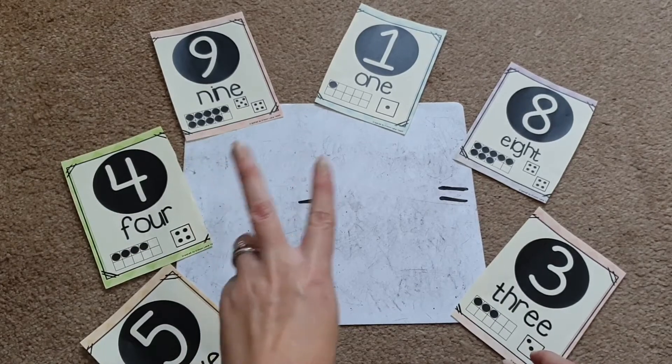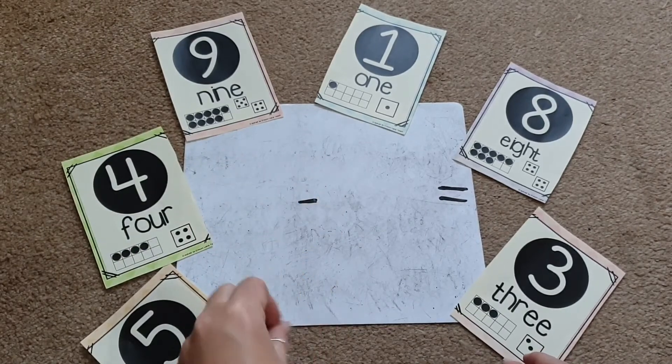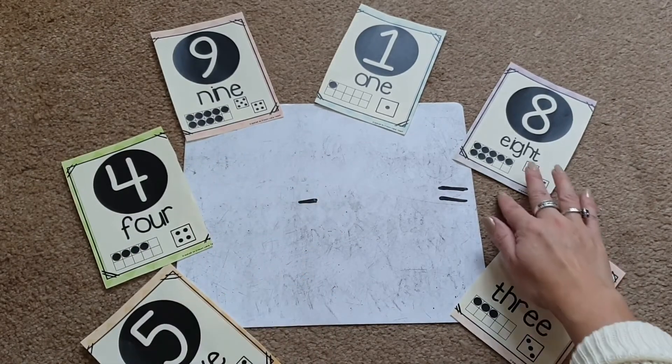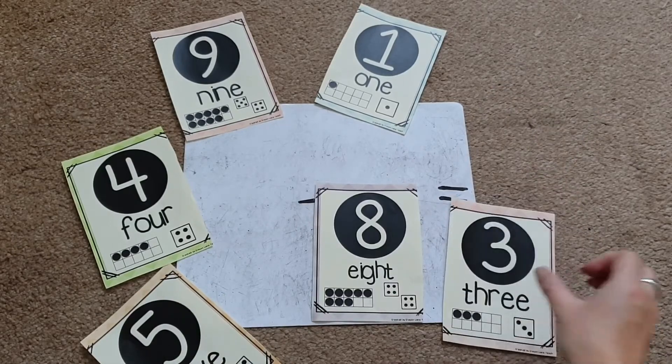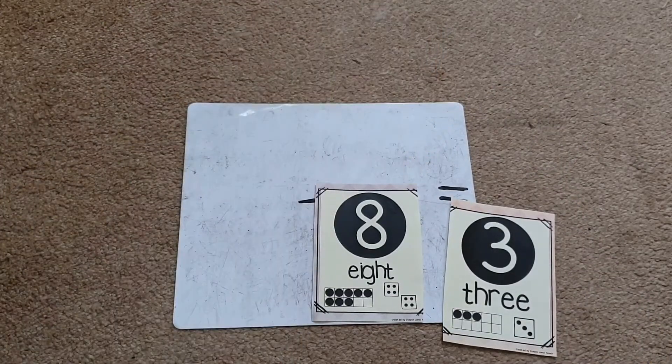Now what I would ask the children to do is pick two flashcards, two numbers to work with to do their subtraction. So I'm going to pick the number 8 and the number 3. So then I'm going to get rid of all the other cards.